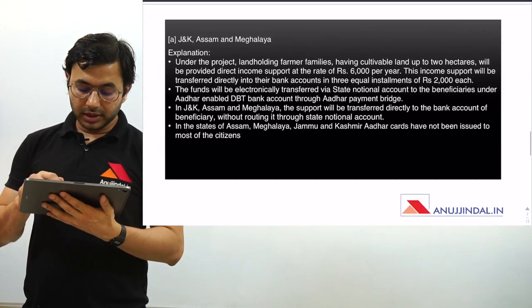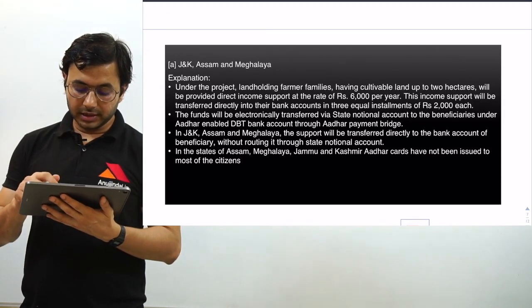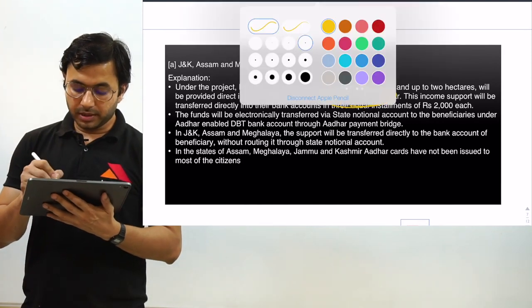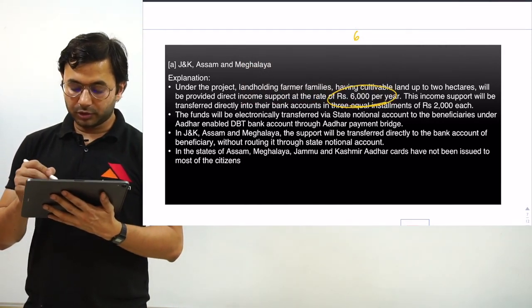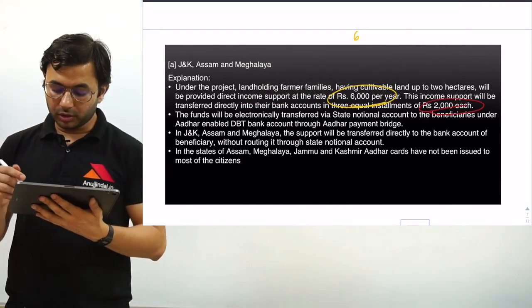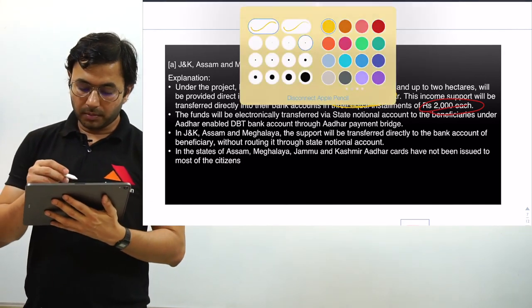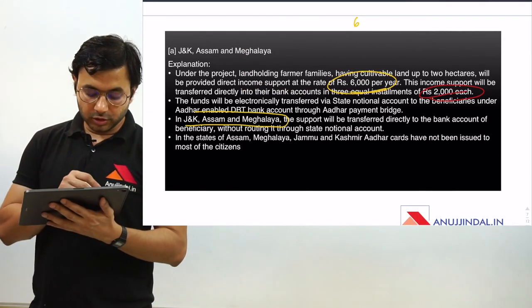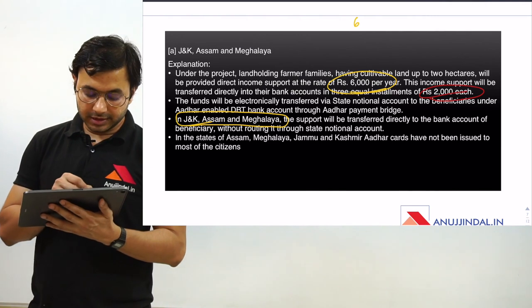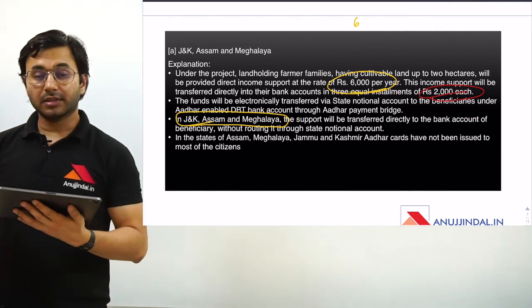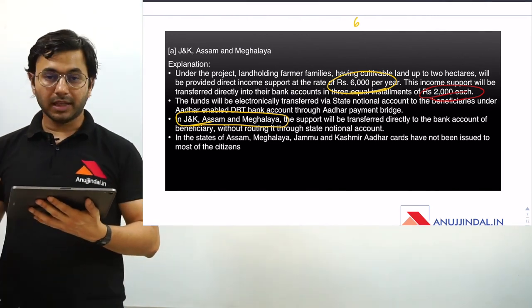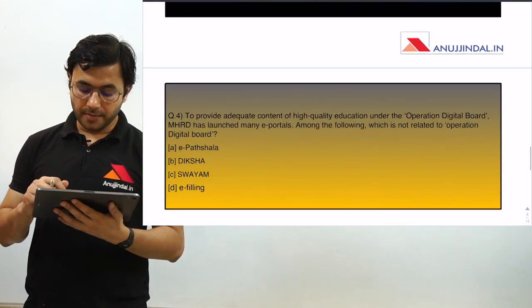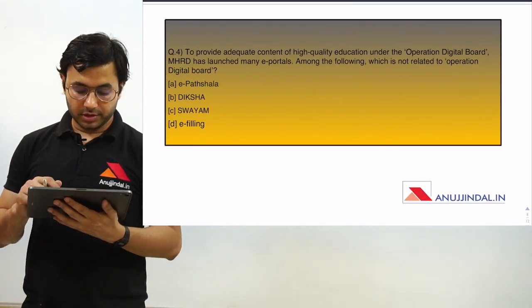Under Pradhan Mantri Kisan Samman Nidhi, a total sum of ₹6,000 per year is provided in three installments — a very popular scheme you must be aware of. In the case of those three states, as I said, the funds are transferred directly to the bank accounts without involving the state nodal account. That's why I wanted to make a question on this specific point.